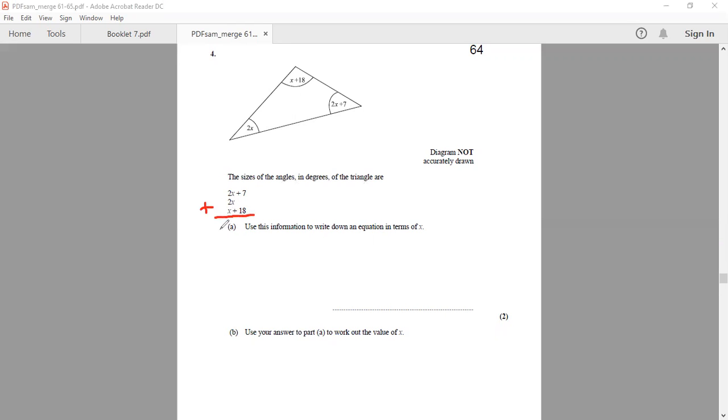So if we find the sum of all of these angles, we're going to get 2x plus 2x plus x, which will give me 5x. And plus 7 and plus 18 will give me plus 25. And as we know that all the three angles in a triangle add up to 180. So that's why we're going to write 5x plus 25 equals 180 degrees.